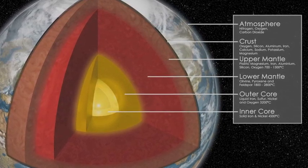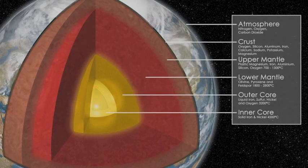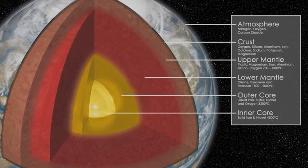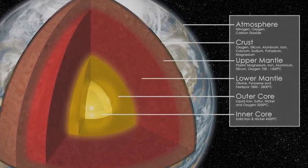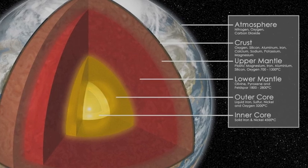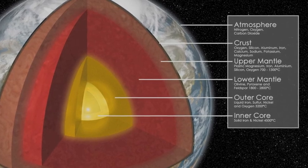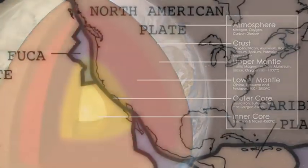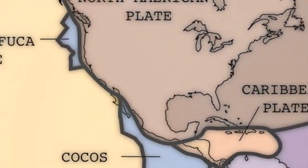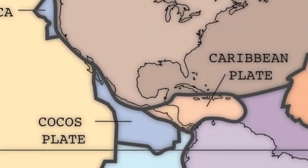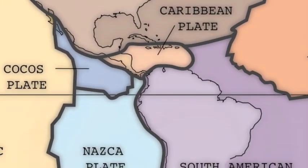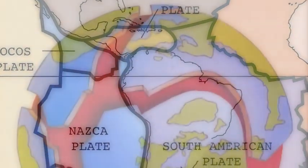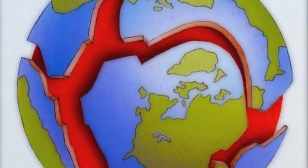Between the crust and the rest of the Earth — where the upper mantle, lower mantle, and the core are — is a very important thin lubricating layer called the lithosphere. Composing the crust and resting on the lithosphere are very large pieces of land called plates. These plates interact with each other.